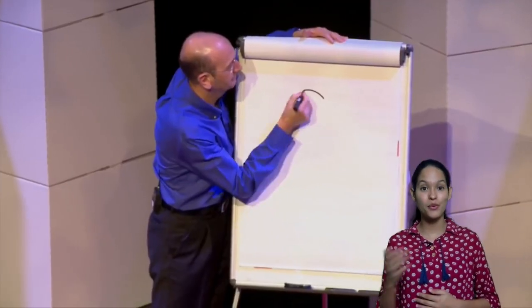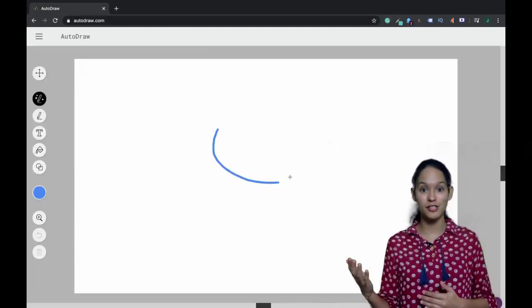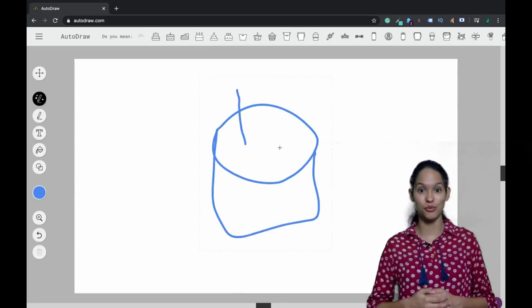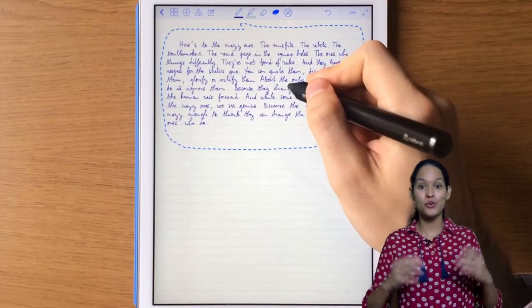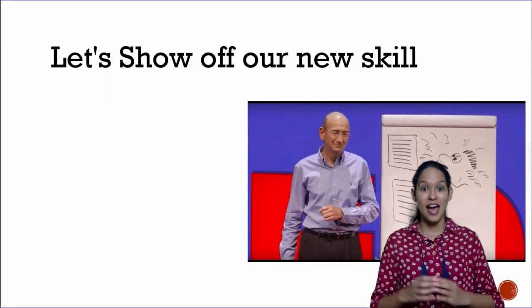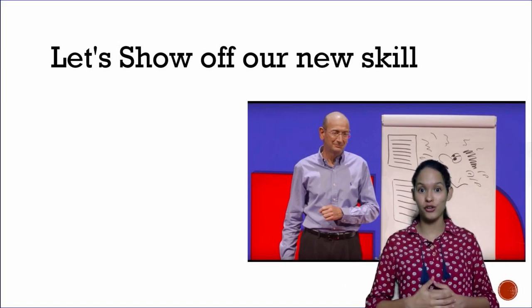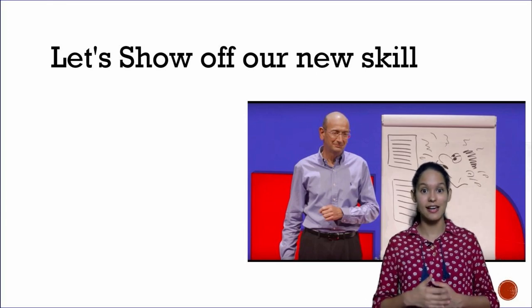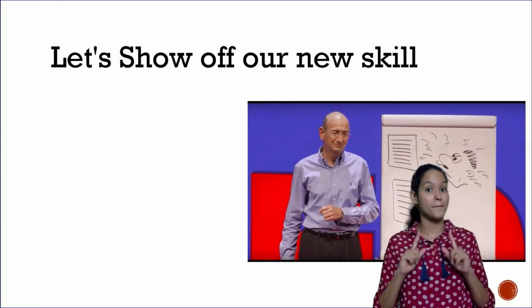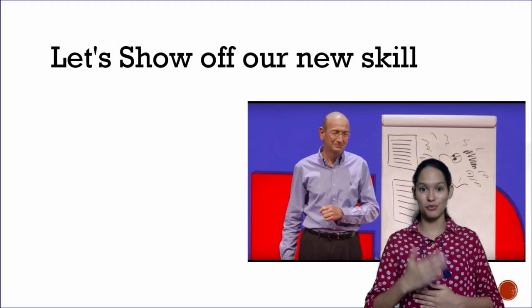We've come to the end of our session. Here's a short summary: we realized how simple it is to draw with Mr. Graham, then we were introduced to the AutoDraw AI tool, and later we explored the different applications of AI. Now it's your turn to show off your new skills by posting your assignments and comics on social media like Facebook, Instagram, and Twitter — but don't forget to tag Cutie by Robotics. See you in our next video!